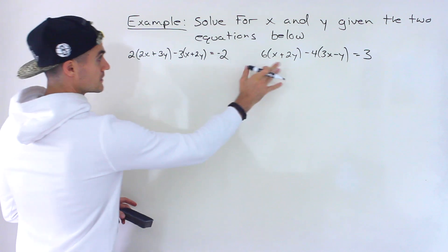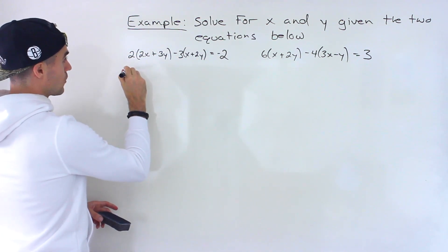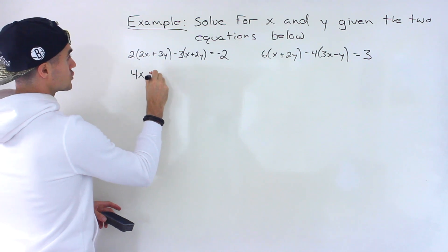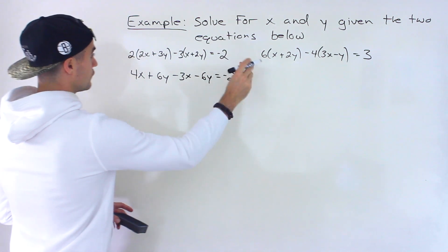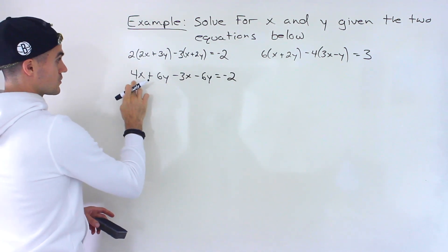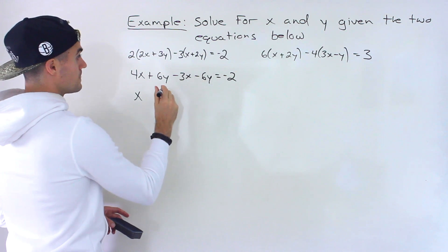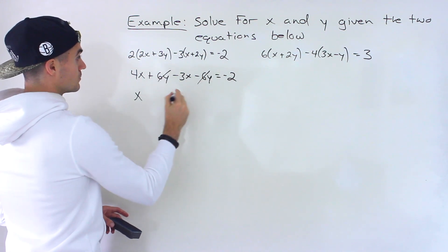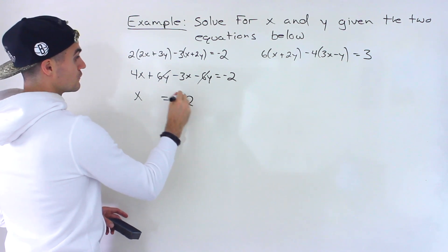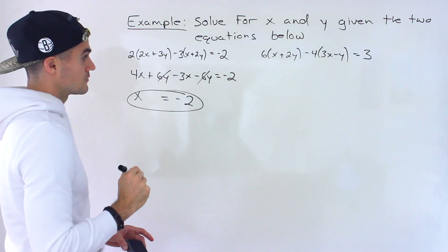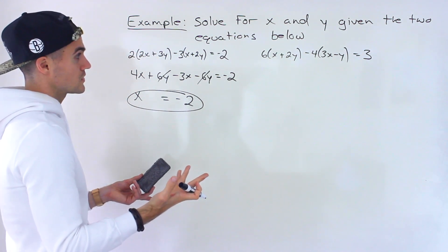Before substituting, let's expand the first equation and simplify. Expanding gives 4x + 6y - 3x - 6y. Notice that 4x - 3x is x, and 6y - 6y cancels out, so we get x = -2. That's actually the answer for x right away — we didn't even need substitution or elimination for this one.